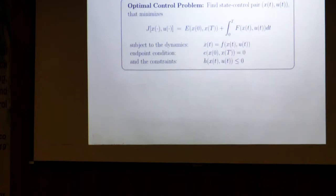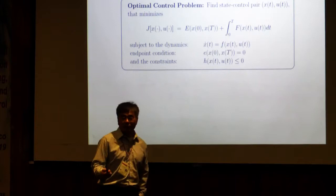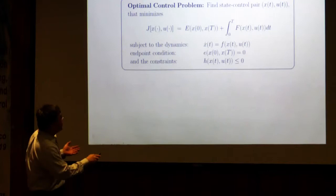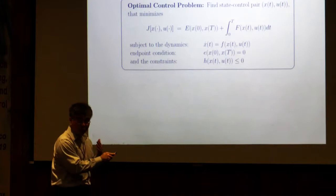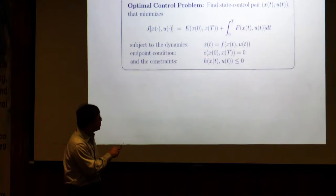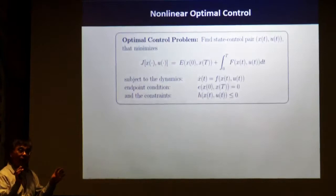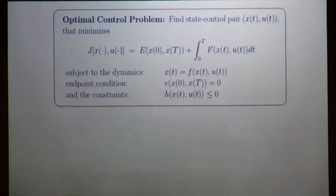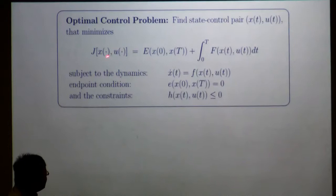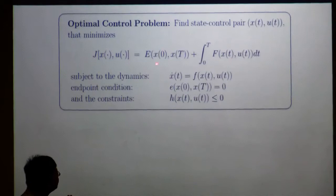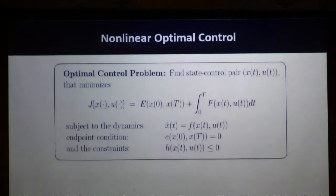Let's take a look at a standard optimal control problem — a nonlinear optimal control problem. What I present here is a generic problem formulation for a nonlinear constrained optimal control problem. We want to identify the state X and control U satisfying some constraints. The first constraint is the dynamic system. The second is boundary conditions. The last is constraints on state X and control U. We want to find X and U that satisfy these constraints while minimizing some performance metric.